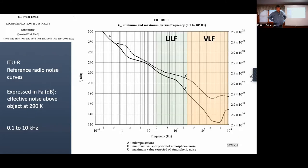Radio amateurs have communicated at VLF with surprisingly low power levels. The interesting thing about VLF and ULF is that loss per thousand kilometers is not that much. If you can get your signal into the waveguide between the ground and the bottom of the ionosphere at about 85–90 km in the D region, it can propagate thousands to tens of thousands of kilometers. However, 99.9% of your transmitter power is wasted — most of the RF goes right into the ground.